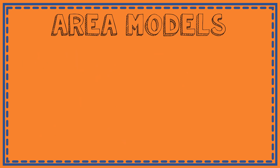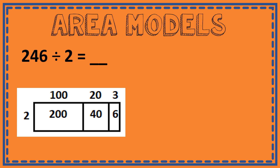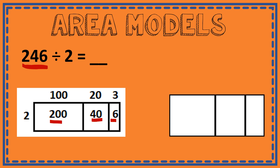So let's look at another example of an area model. Here's your equation: 246 divided by 2. The area model that would match this has your dividend represented inside the box, and it's again been broken up to make it easier to divide by 2. It was broken up into three parts: 200, 40, and 6. And my divisor, 2, is on the left.